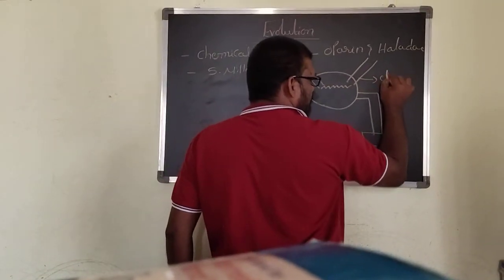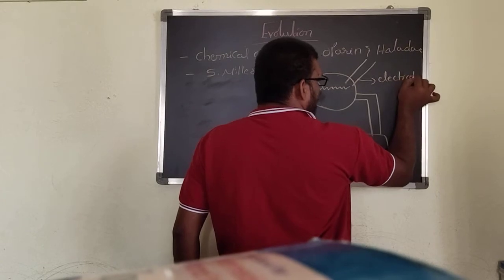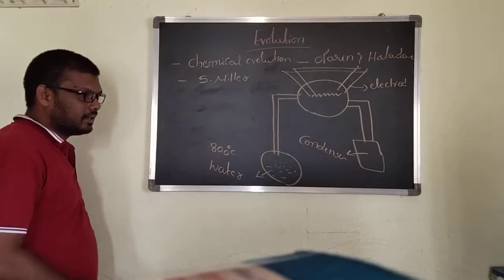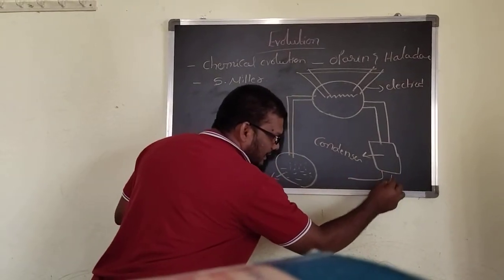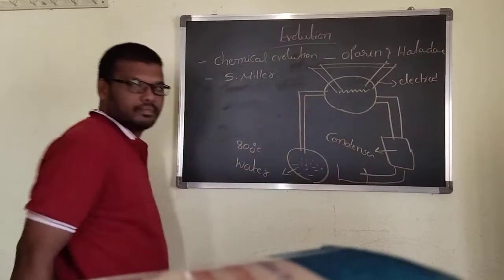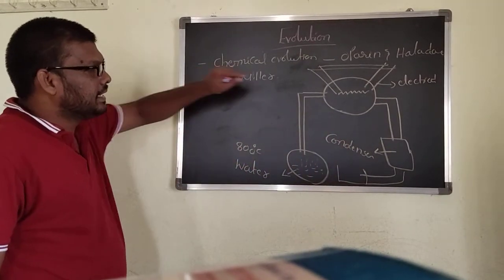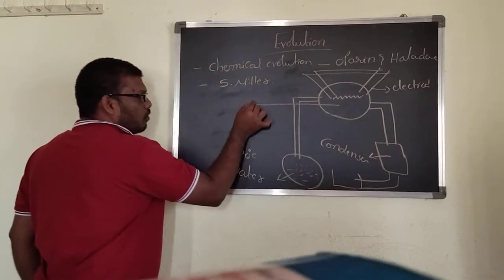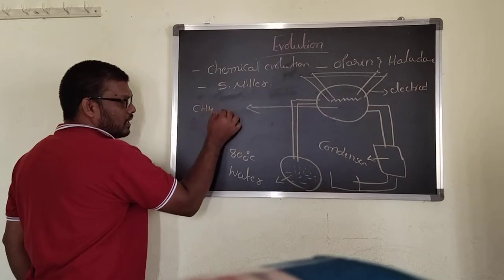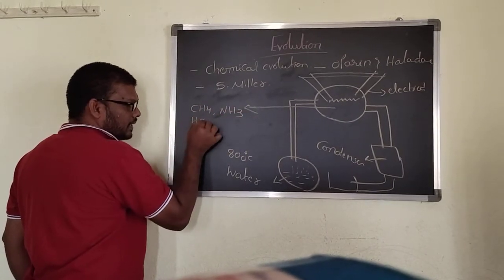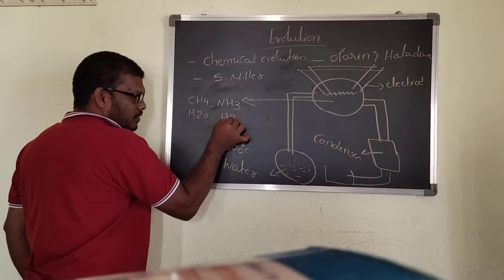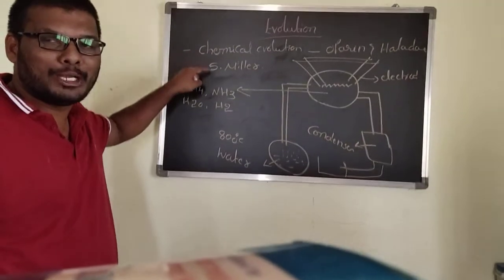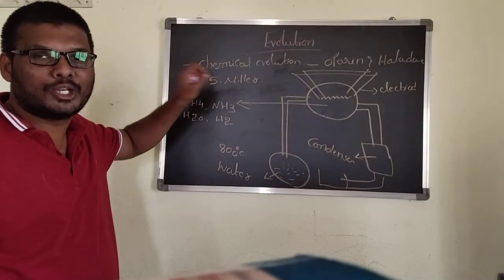These are the electrodes. And here a collector is present. In this spark chamber, we can take methane, ammonia, water, and hydrogen. Why we take these — these are all the conditions of the primitive atmosphere, or reduced atmosphere.